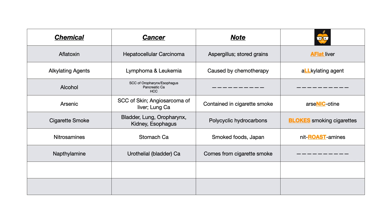Naphthalamine causes urothelial carcinoma of the bladder, and this actually also comes from cigarette smoke. If you go back two rows in the table, we noted that cigarette smoke causes bladder cancer — naphthalamine is just the more specific mechanism. I don't have a strong mnemonic for this one, so if you have a good one, drop it in the comment section so other viewers can benefit.